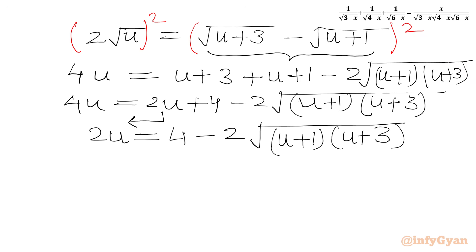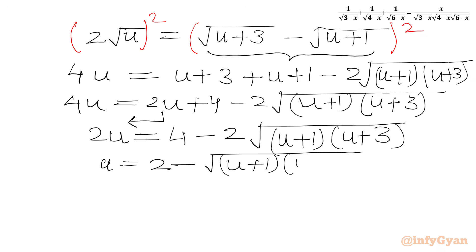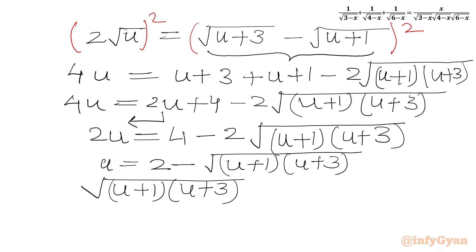Now we get 2u equal to 4 minus 2 times square root of (u plus 1)(u plus 3). The equation is divisible by 2, so dividing both sides by 2 we get: u equals 2 minus square root of (u plus 1)(u plus 3). Rewriting, we get square root of (u plus 1)(u plus 3) in the LHS and 2 minus u in the RHS.